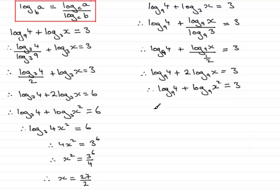Using the addition rule now for logs, I can create one log term on this side. This becomes the log of 4 times x squared in base 9, so that's 4x squared, and that equals 3.